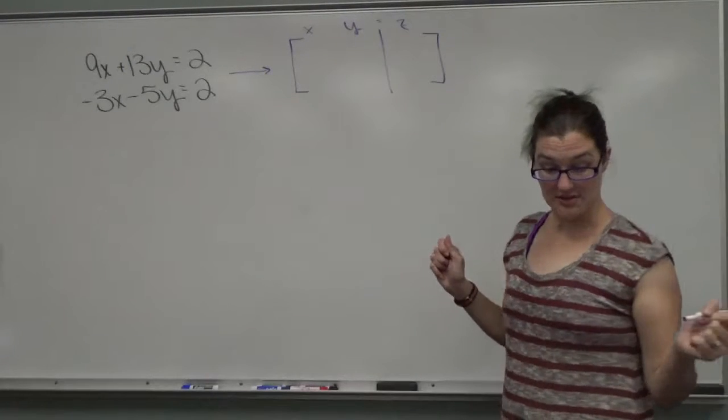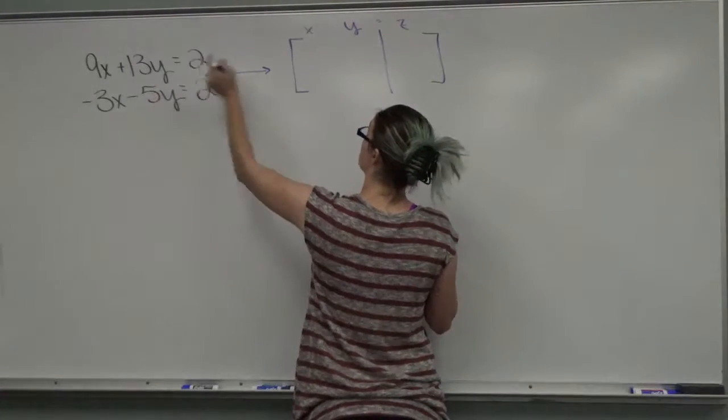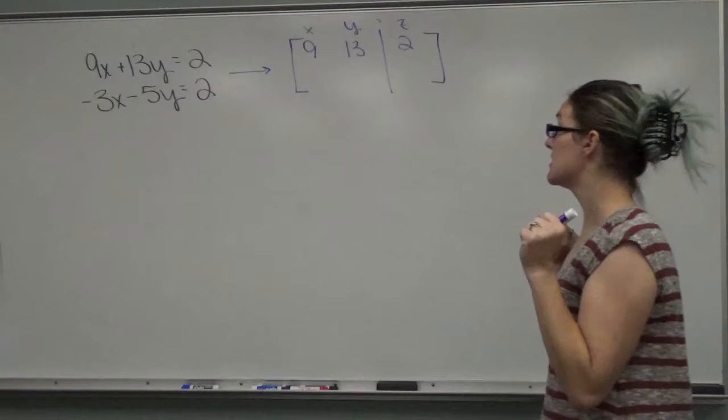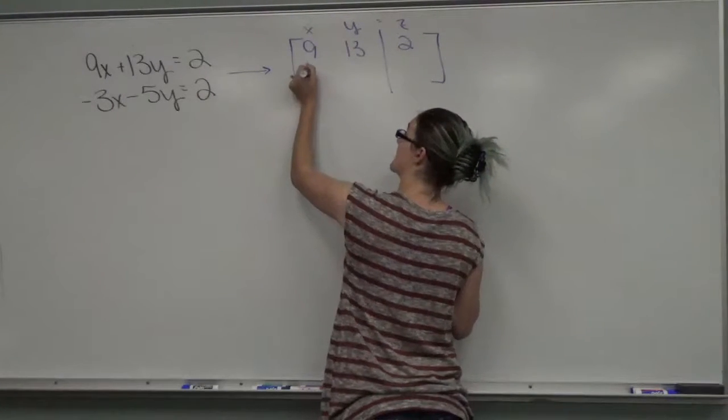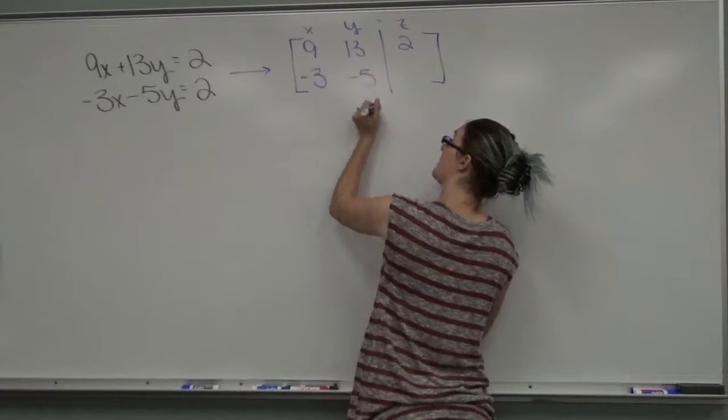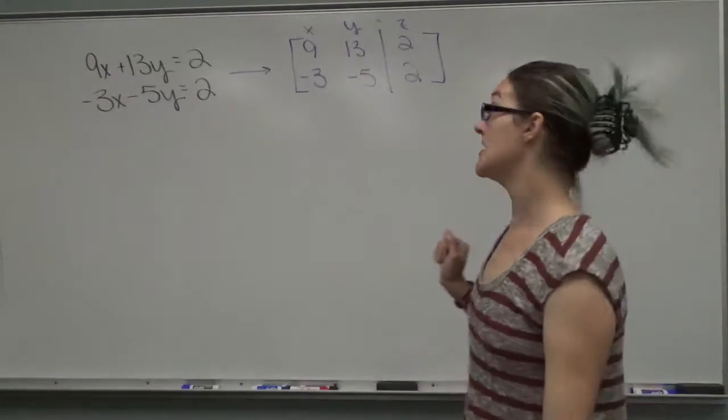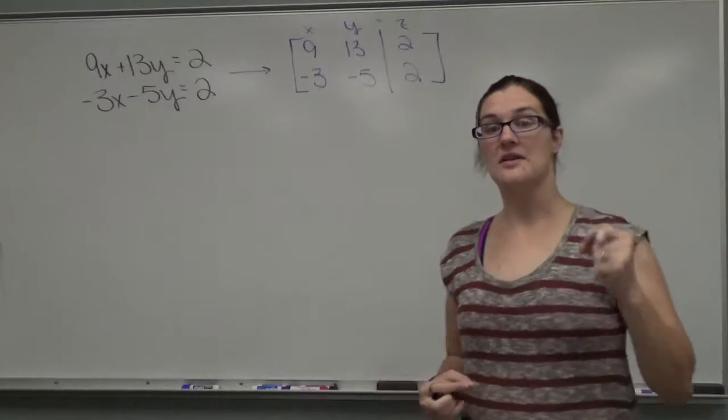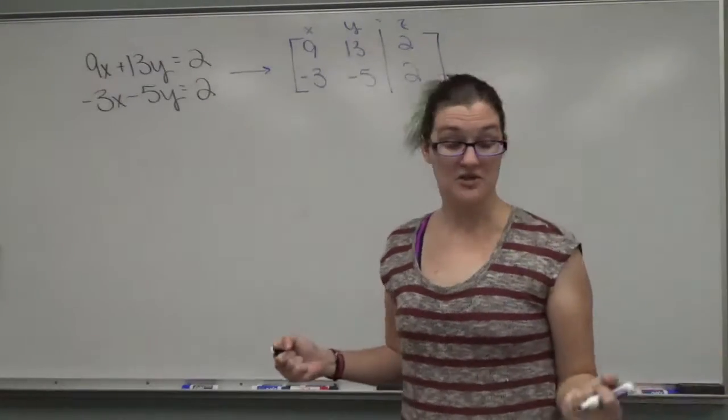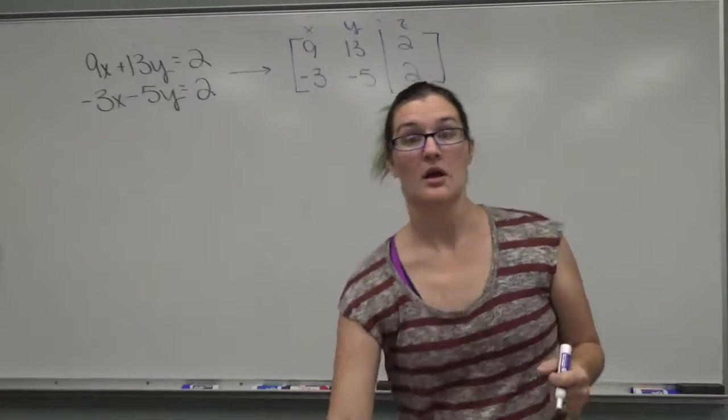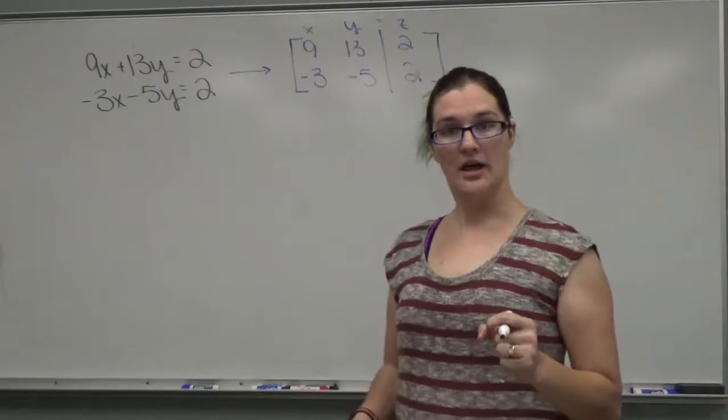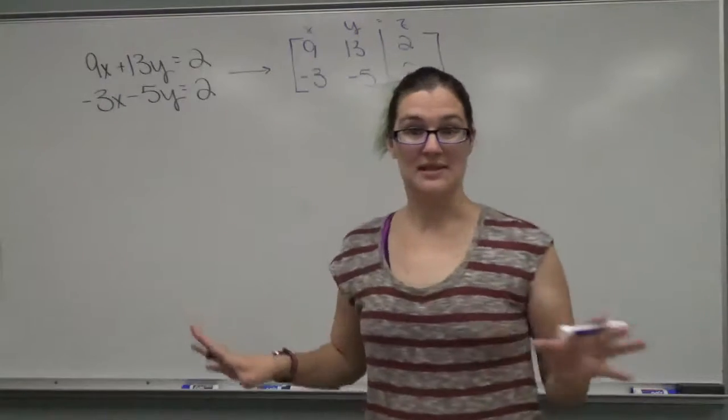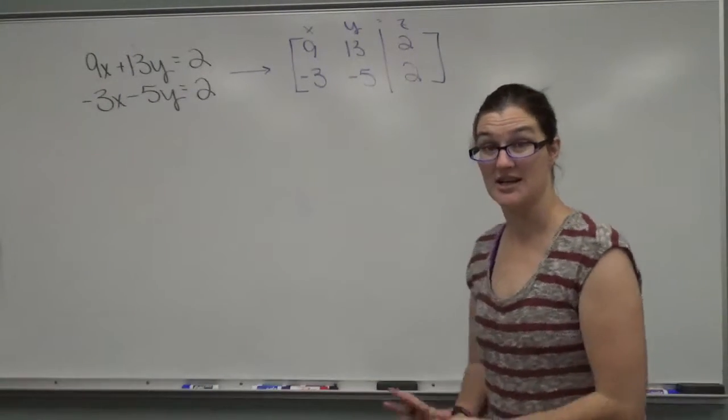They tend to put a little bar where the equal sign goes to help you differentiate that. First row has a 9 for the x, 13 for the y, and a 2 for the z. The second row has a negative 3 for the x, a negative 5 for the y, and a 2 for the z. So matrices pretty much just get rid of the variables and allow us to work with the numbers. Because of that, you've got to be very careful when you organize. I'm going to do it on paper because the organization is so vital.